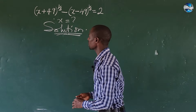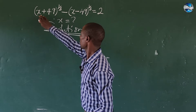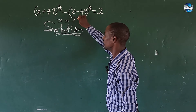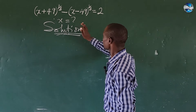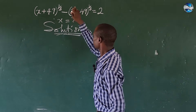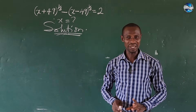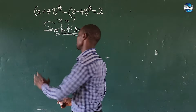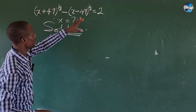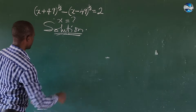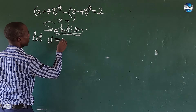So here we take substitution. When I saw this question at first, I tried to do some manipulation but it didn't work out. If you look at what we have inside these brackets, this is a conjugate of this. So I tried to multiply this by this to get something useful, but I didn't get the solution through that method. So what we do now is make some substitutions.